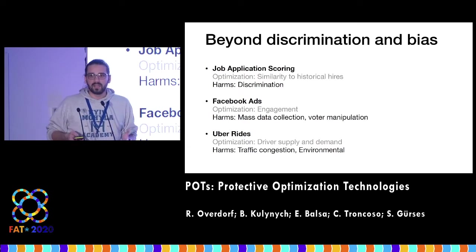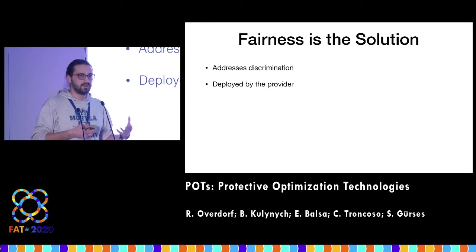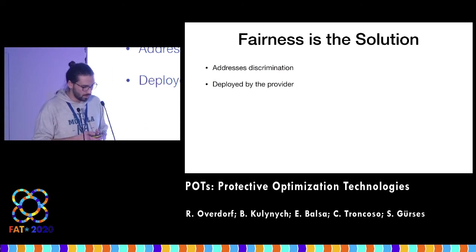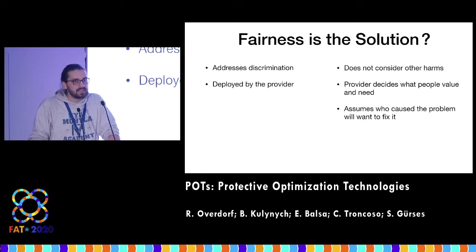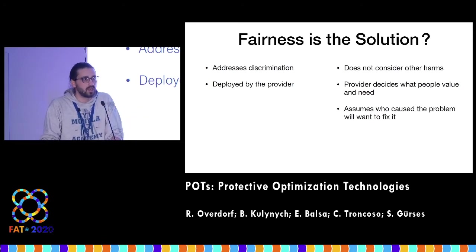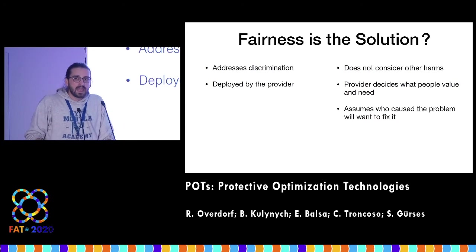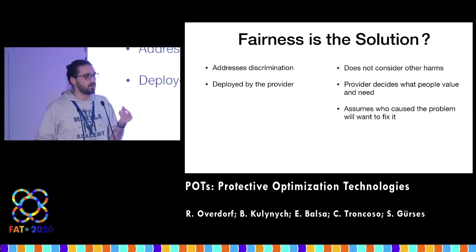Now we have this wider, more diverse set of issues with technological systems. How do we deal with them? How do we rectify these issues? Algorithmic fairness is one possible solution — it addresses discrimination and is usually done by design, so the provider of the system is supposed to employ a fairness solution. What we argue in the paper is that algorithmic fairness is not always the right solution. By focusing on discrimination, we do not consider other possible harms, such as mass data collection. And problems stem from the by-design approach — connected to the previous talk's point about imbalance of power. We have a system that negatively affects some people, and it's not those people who decide how it needs to be fixed. It's the provider that ultimately decides who values what and who needs what, which might be an issue.